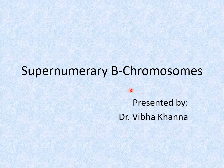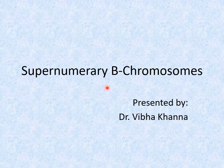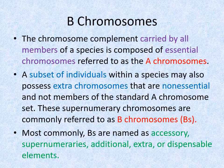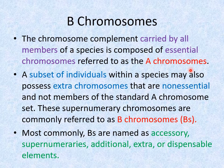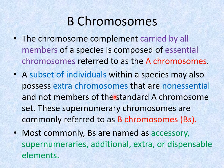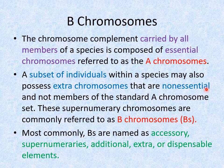Welcome to this tutorial on the enigmatic supernumerary B chromosome. The chromosome complement carried by all members of a species — the essential chromosomes — are commonly referred to as A chromosomes. But in some species, certain special extra chromosomes have been observed that are not present in all individuals and are non-essential; such chromosomes are grouped under the category of B chromosomes.